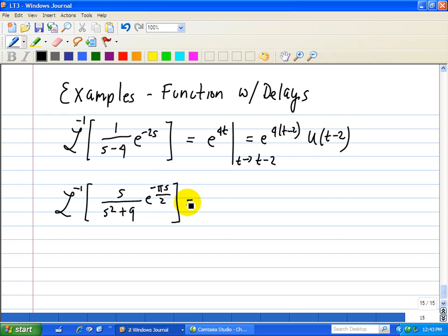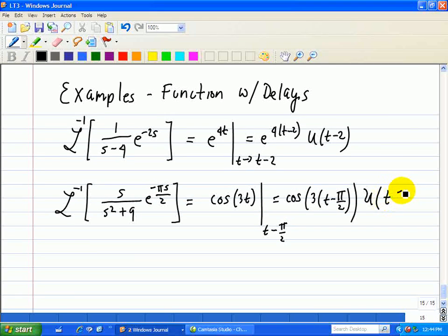In this one, we recognize this form as a cosine of 3t, and we're going to do the same thing wherever there's a t. We're going to replace it by, in this case, pi over 2. So this is just going to be a cosine, 3(t minus pi over 2), multiplied by a step of u(t minus pi over 2). So that's how you do the inverse Laplace transform when your function has delays.